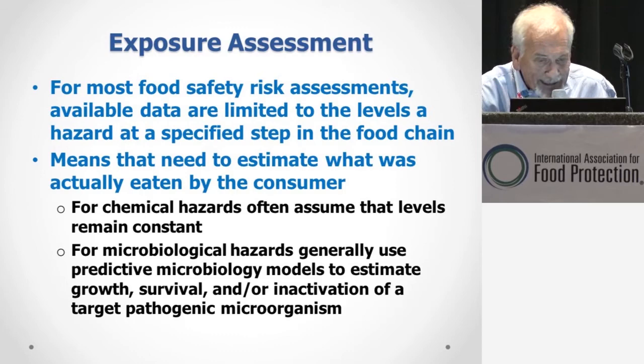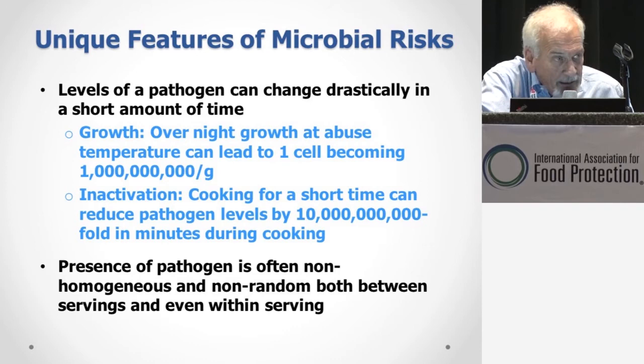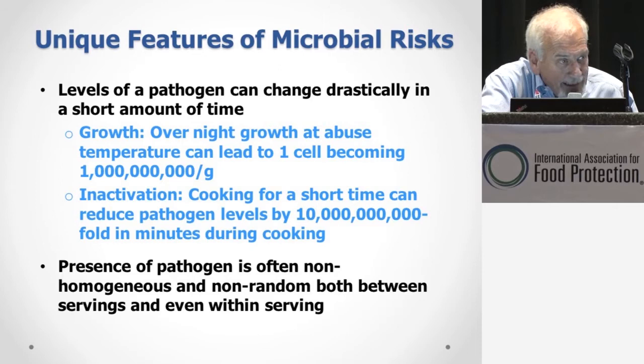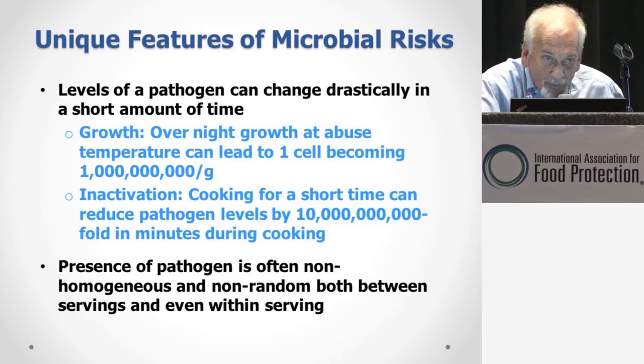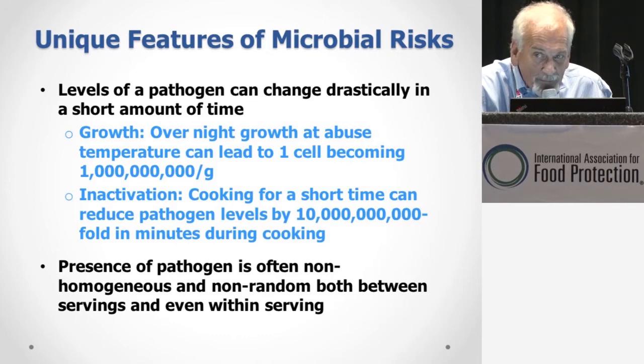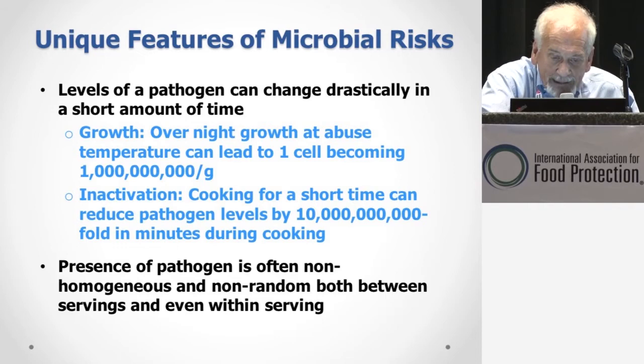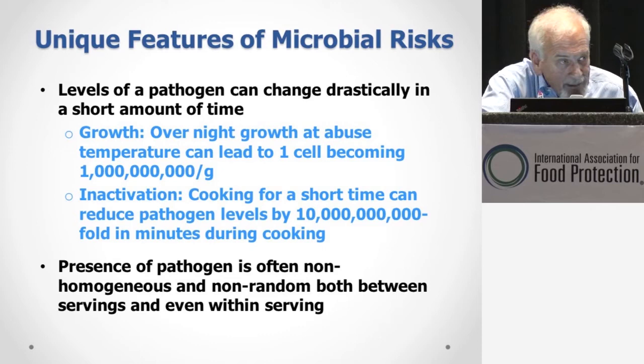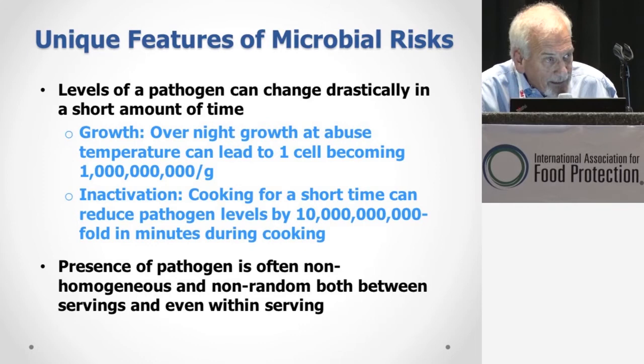Here are a couple of short examples to show how dramatic the changes can be. If you're talking about a temperature-abused product that's been held at an improper temperature overnight, you can go basically from one cell up to a billion without blinking an eye. Conversely, if a consumer cooks the product just before they consume it, you're going to go from 10 billion down to zero or close to zero in a few minutes. The distribution of the organism is also often non-homogeneous or non-random, so you may have to figure out what the distribution is in a product or lot of food.